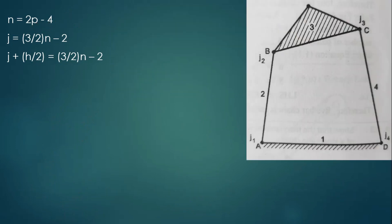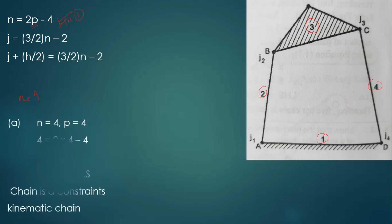Next, consider a mechanism with a ternary link (turner link), treating it as a single link. Applying Equation 1: n = 4, p = 4. Substituting gives 4 = 4, so LHS equals RHS — the given chain is a constrained kinematic chain, similar to the four-bar mechanism but with a turner link instead of a simple link.